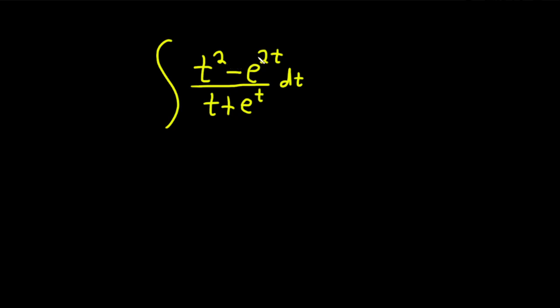So the idea here is to realize that the numerator is actually the difference of squares. You can think of e to the 2t. This is the same thing as e to the t and then this whole piece here is squared.